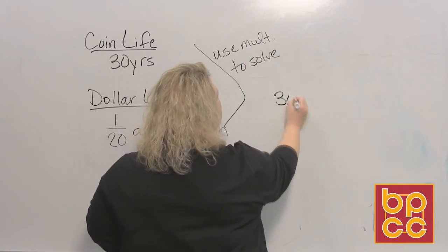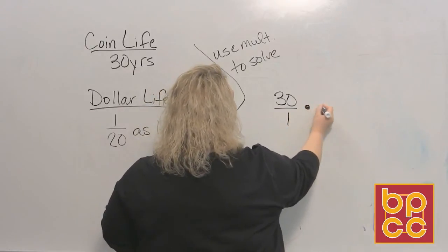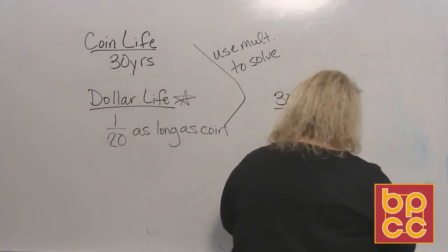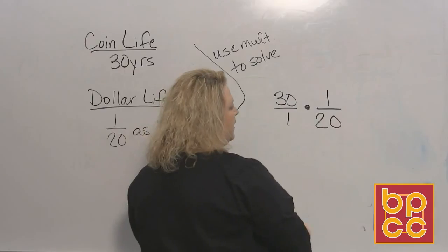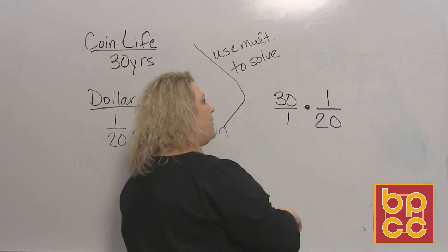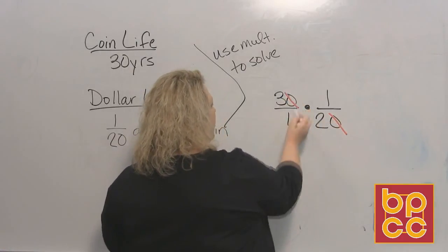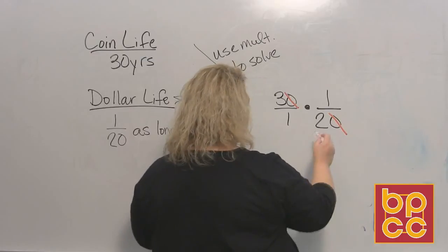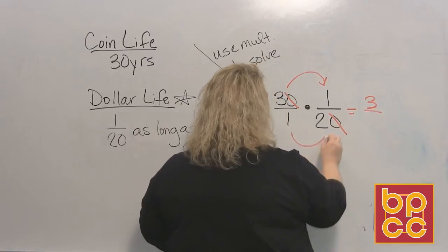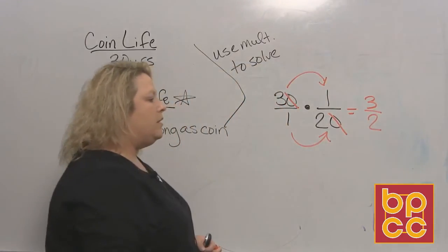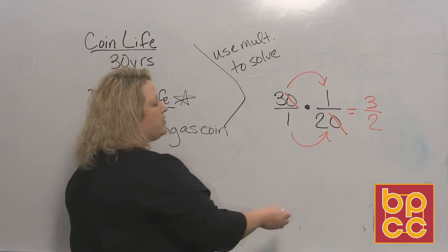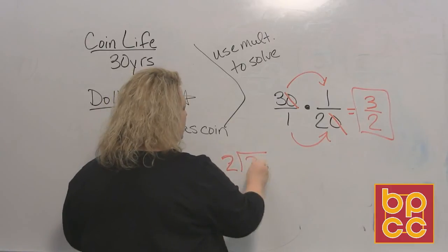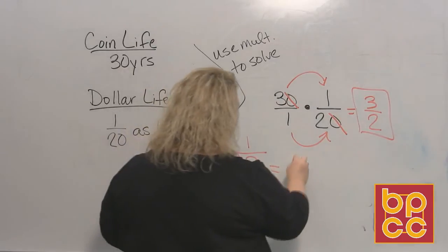We take 30 years as a whole number over one, times one over twenty. Both numbers have zeros, and from a previous module we learned that when dividing by powers of ten you can cross off matching zeros — so those zeros divide out. That leaves top times top, which is three, and bottom times bottom, which is two — giving three over two. Since we're talking about years, we convert: two divides into three one time with one left over, giving one and one-half years.